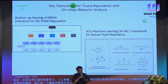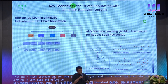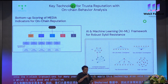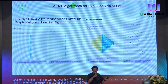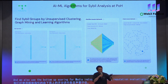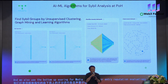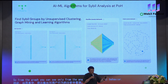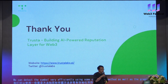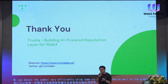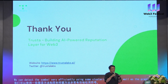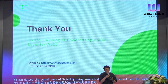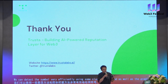This is very effective. We also use a bottom-up scoring approach for media indicators for on-chain reputation evaluations. From the graph, you can see that purely from the analysis of user behavior, we can detect sybils very efficiently using clustering methods as well as graph neural network methods. That's the experience we have from the past year. We work for a lot of top projects for their airdrops using our on-chain reputation, and we expect to explore more use cases in the future. Thank you.